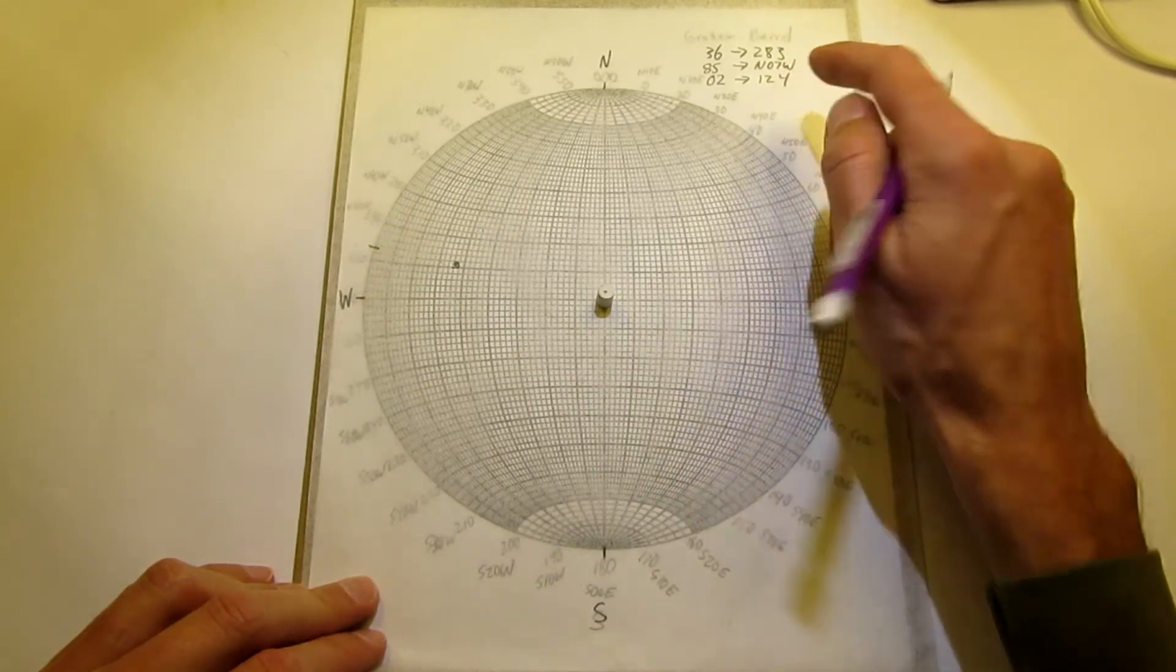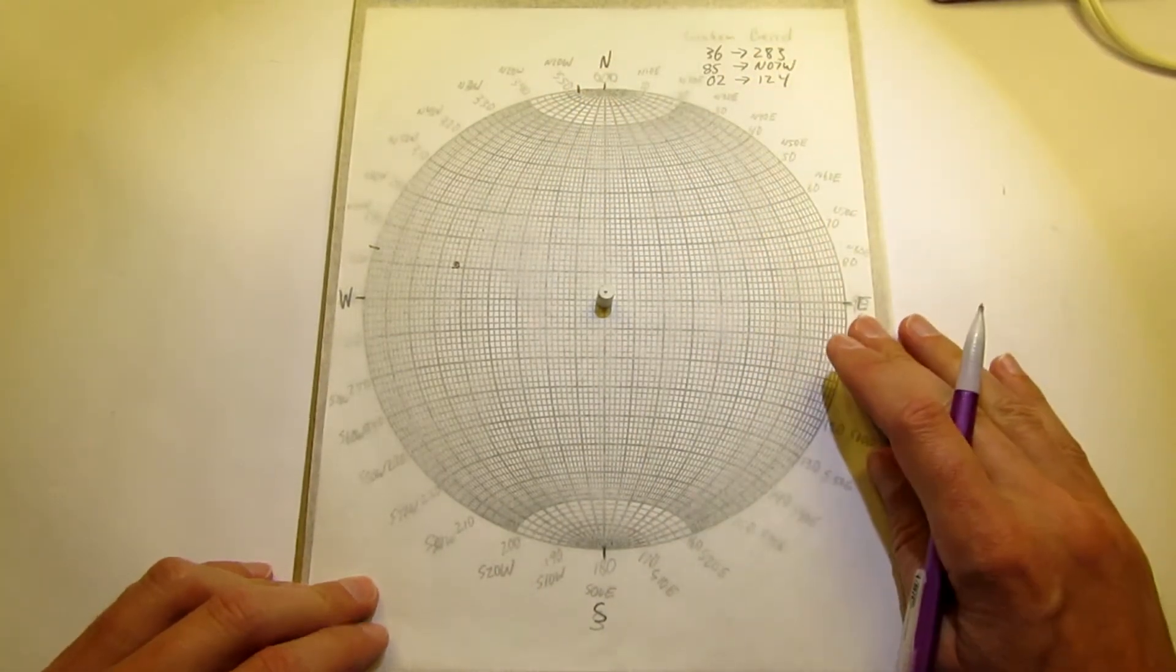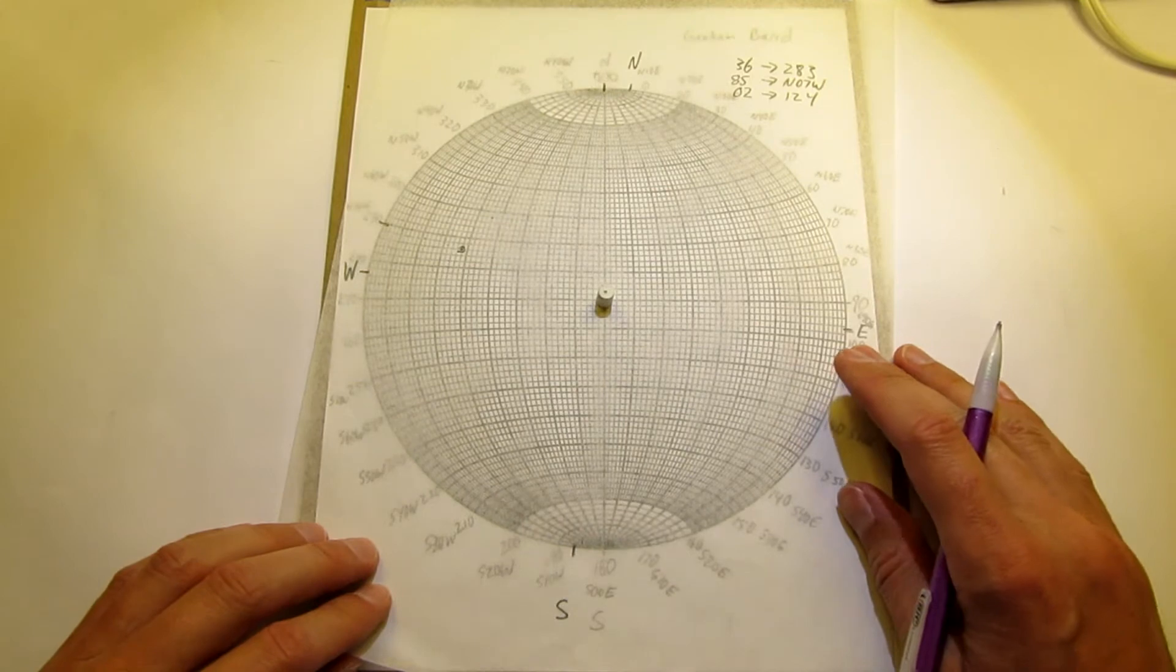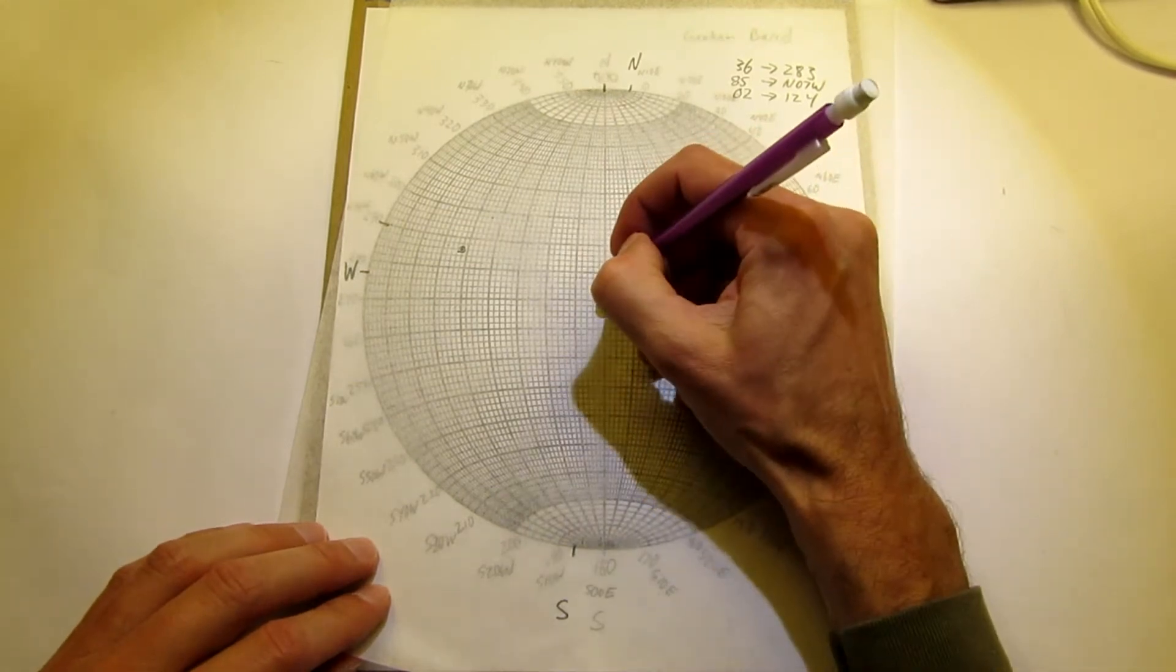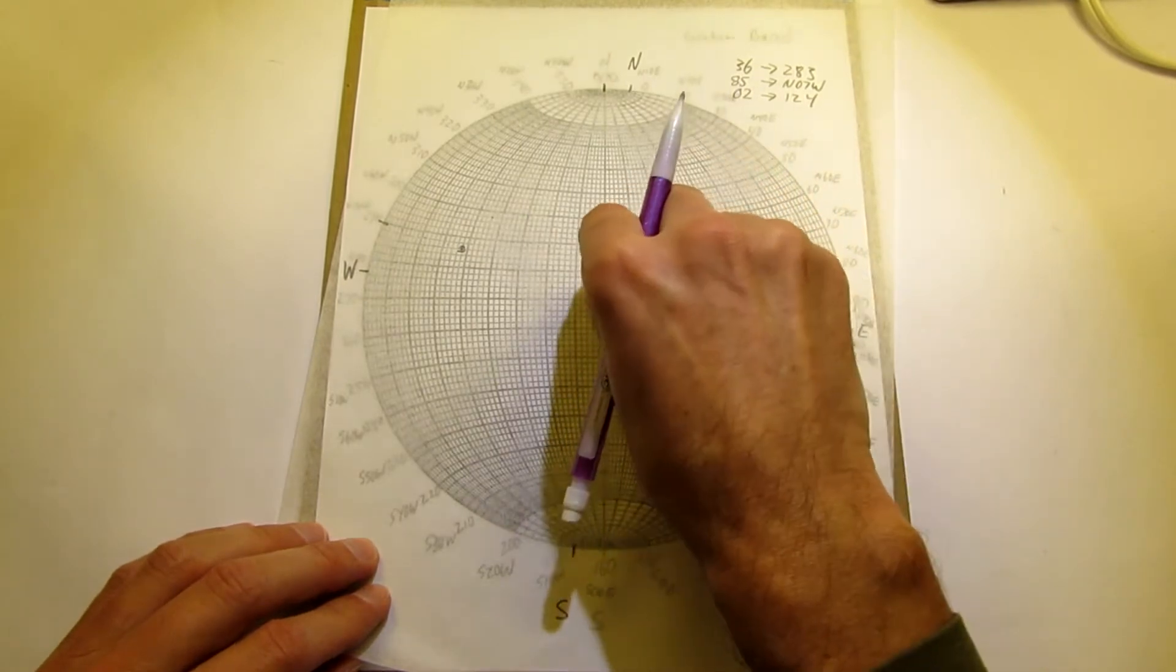Okay, next up, north 07 west for a trend and then a plunge of 85 degrees. And there, that's plotted successfully.